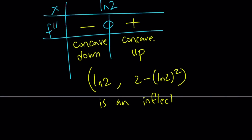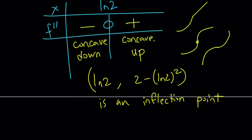An inflection point is basically where the concavity changes. So let's say you have a graph that is concave up and then it becomes concave down — that is where the concavity changes. Our graph is concave down first, so it's going to look like this and then like that. For example, y equals x cubed has an inflection point at zero. So that's basically another thing you can check.